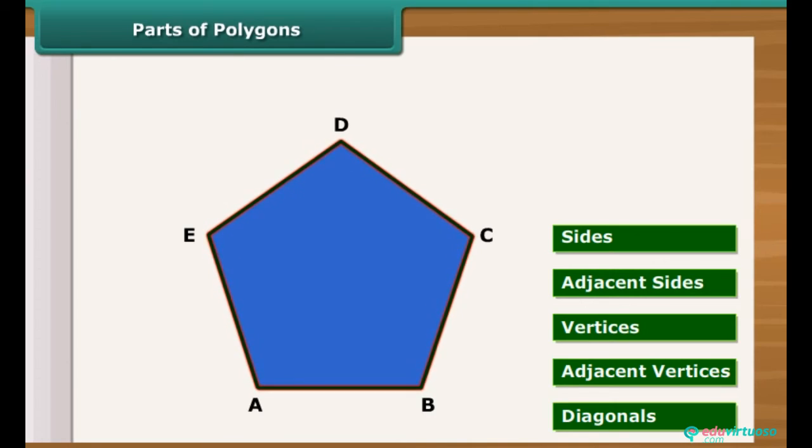The endpoints of the same side of polygon are called adjacent vertices. For example, A and B, B and C, C and D, D and E, E and A are adjacent vertices.